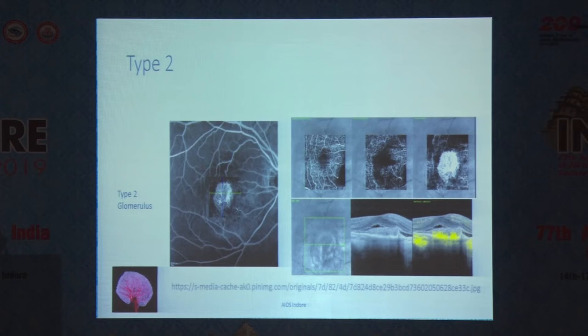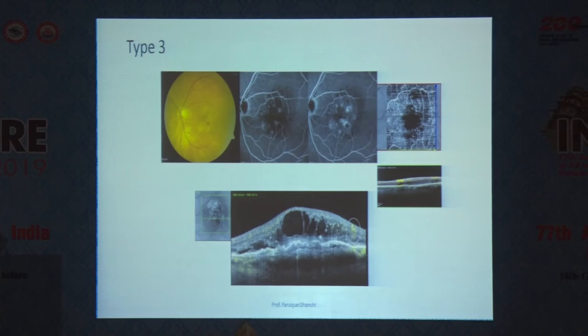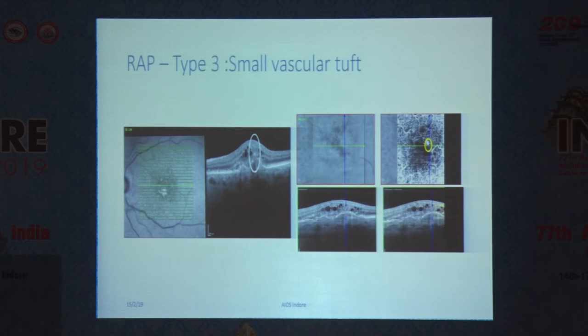When it comes to identifying type 3 CNV — retinal angiomatous proliferation — it's a bit more problematic because the flow in the new blood vessels is vertical rather than horizontal. Hence, you need to look at the map itself, the picture at the bottom, and look for those yellow pixels identified by the program in the vertical fashion. In some cases, however, if you're lucky, you can also find a horizontal distribution of the network as seen in this picture here.